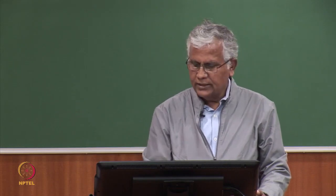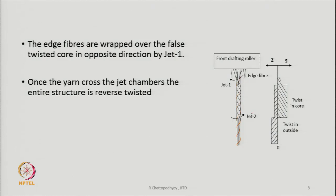In the diagram, jet 2 and jet 1 are shown, with the orange color indicating fibers that are already wrapped. This fiber wrapping is in a different direction than the helix angle seen in the yarn. Because jet 1 rotates in the opposite direction to jet 2, the wrapping direction of the edge fibers due to jet 1 is opposite. Jet 1 pre-wraps the fibers to some extent, and the orange-colored fibers are getting pre-wrapped by the vortex generated by jet 1.